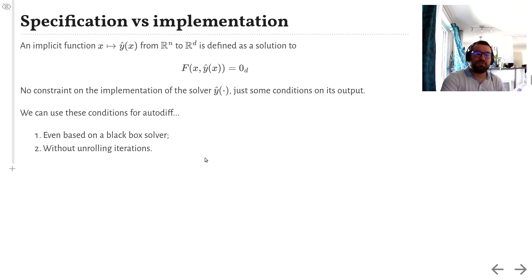F applied to x and y of x must be equal to the vector 0. This is not a constraint on how you actually implement the solver y. It just tells you the conditions that its output must satisfy at all times. And perhaps surprisingly, we can use these conditions to perform automatic differentiation, regardless of the underlying solver, and without needing to unroll the iterations.